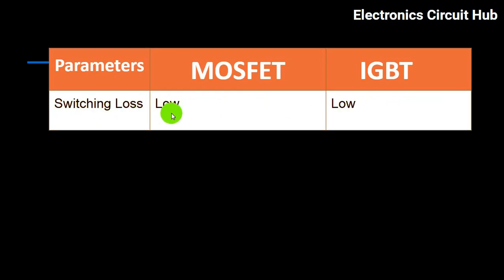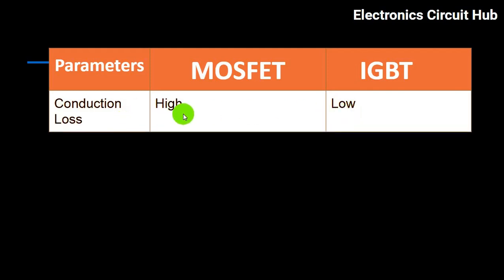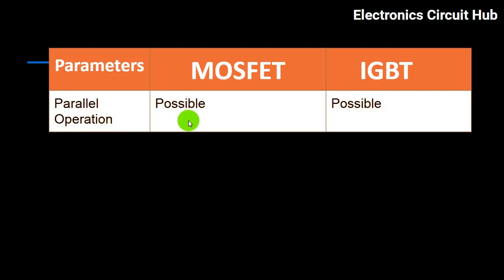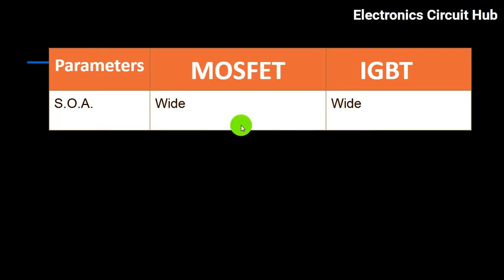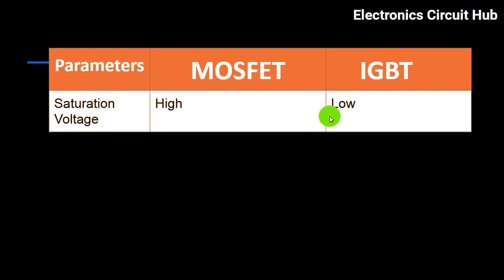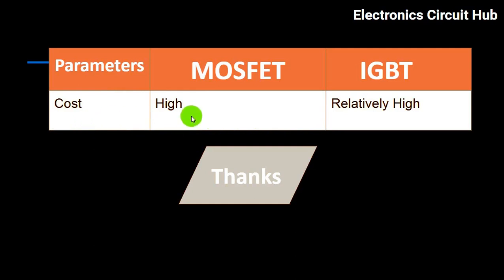Switching losses are low for both MOSFET and IGBT. Conduction losses are high for MOSFET and low for IGBT. Input impedance is low for both. Parallel operation is possible for both. Switching frequency goes up to 1 megahertz for MOSFET and up to 50 kilohertz for IGBT. Temperature coefficient is positive for both. Safe operating area is wide for both. Saturation voltage is high for MOSFET and low for IGBT. Cost is high for both, with IGBT being relatively high.